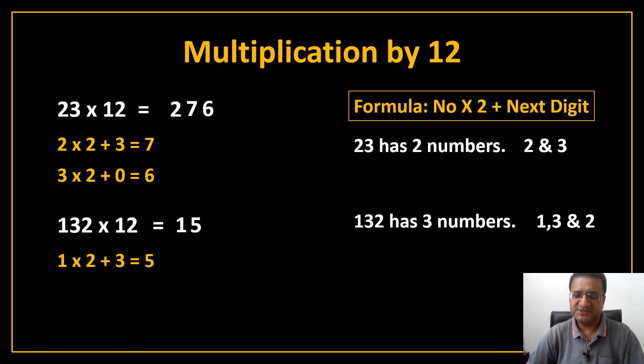After 1, next digit is 3. So, apply the formula 3 multiply by 2 plus next digit. In 132 after 3 next number is 2. So, plus 2 it gives you 8 and you have to add 8 here. Now, the last digit is 2. Apply the formula. Number multiply by 2. So, 2 multiply by 2 plus after 2 there is no digit. So, it will give you 4. Just add 4 here and it is your answer.